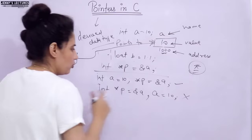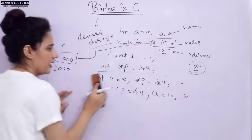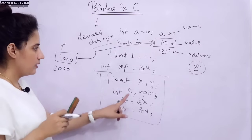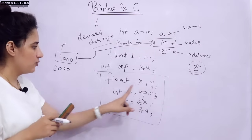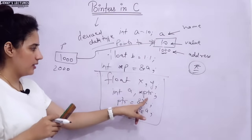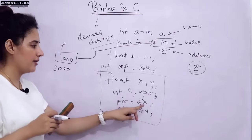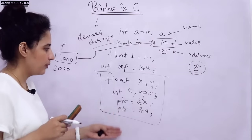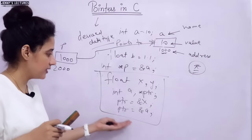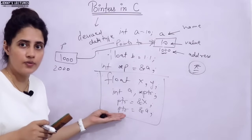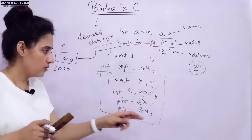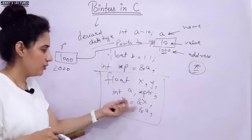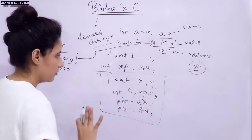Here I just want to get you familiar with the basics of pointers. Now, one question for you: if I write two float variables x and y, one int variable a, a pointer, and in the pointer I am storing the address of x, and then the address of a — which would be correct and which would be wrong? And if both are correct, what would be the final value in the pointer? You can take any address, like 1000 or 2000. Tell me in the comment box.